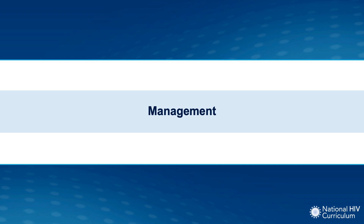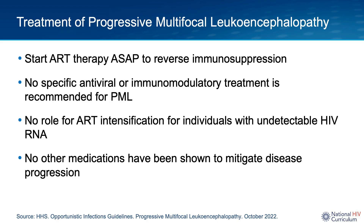The cornerstone of managing PML is immune reconstitution — in other words, to reverse immunosuppression — and this is done by starting antiretroviral therapy as soon as possible.